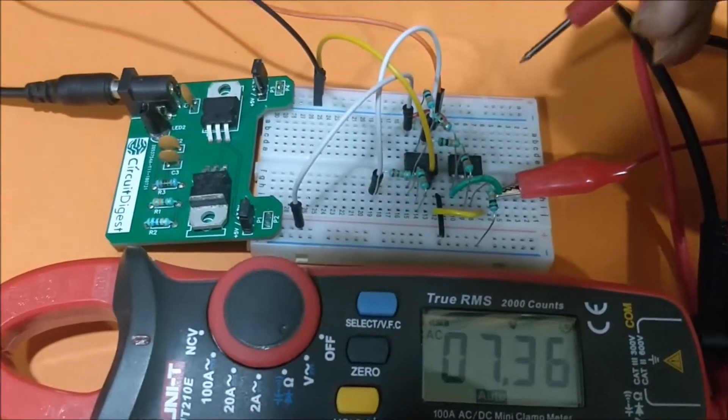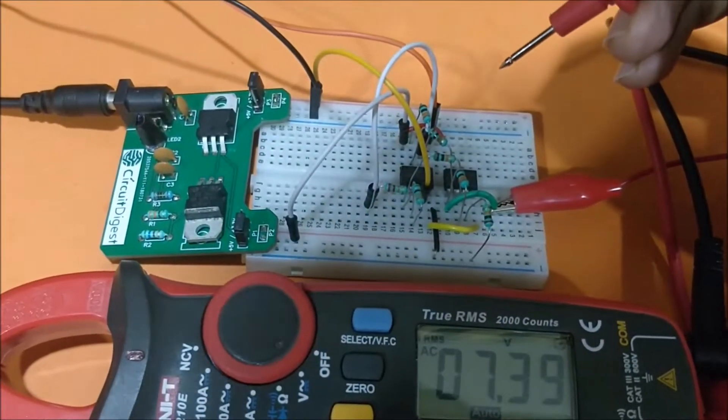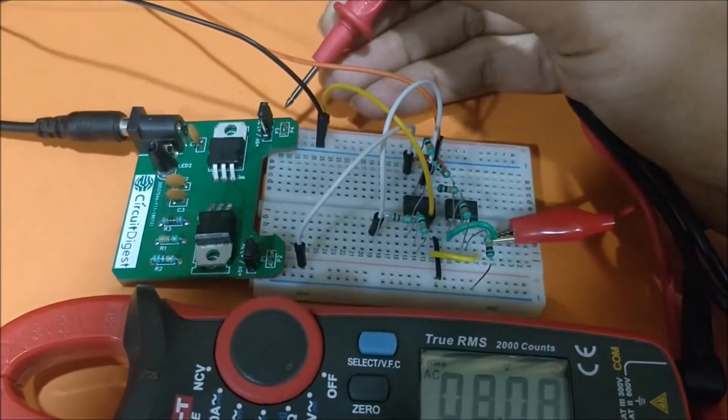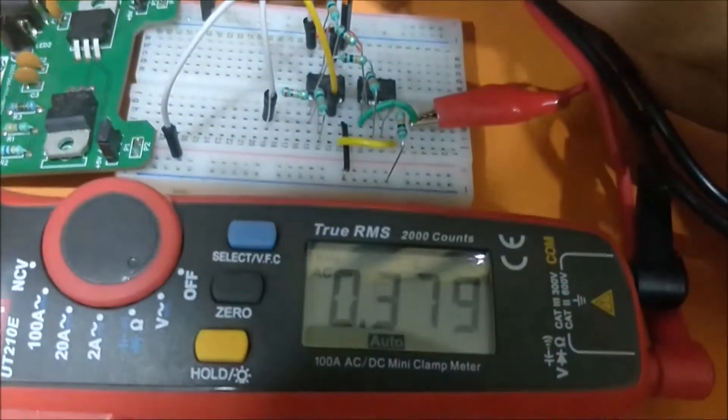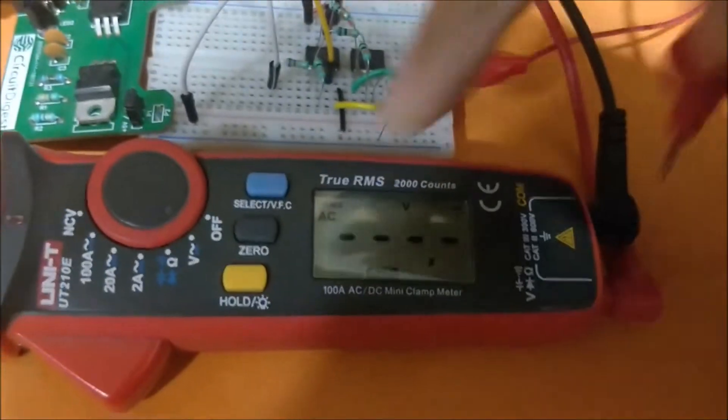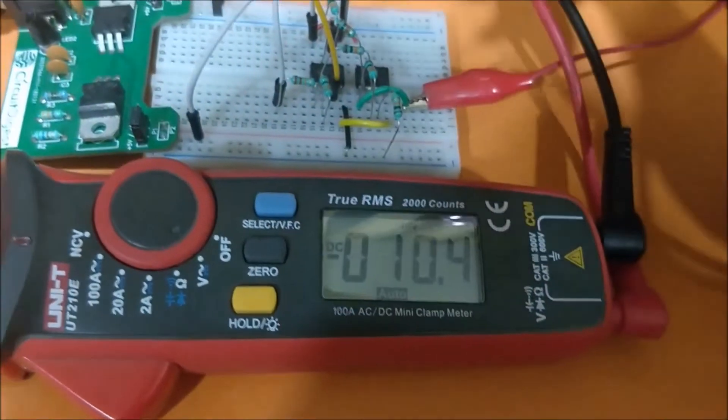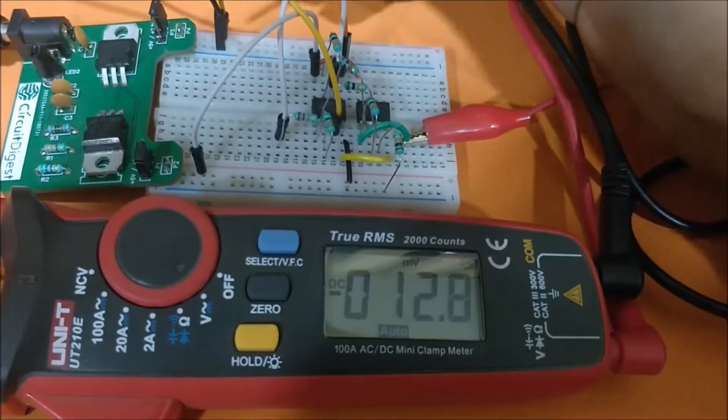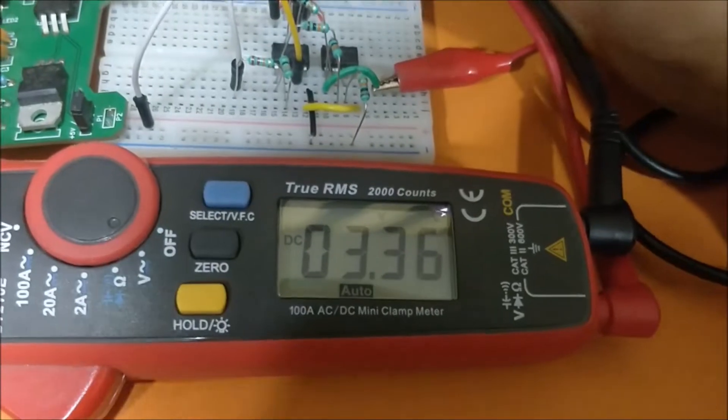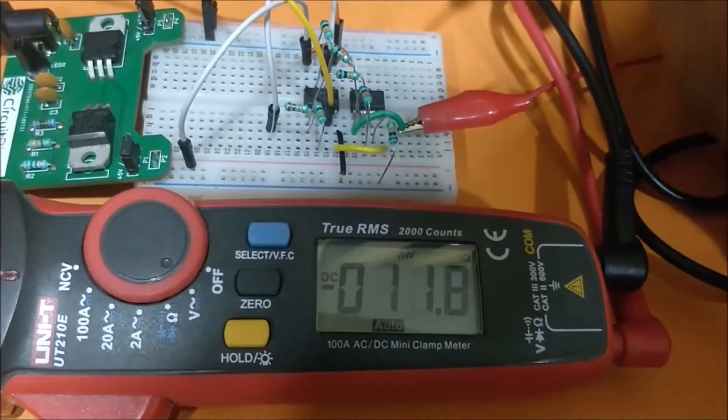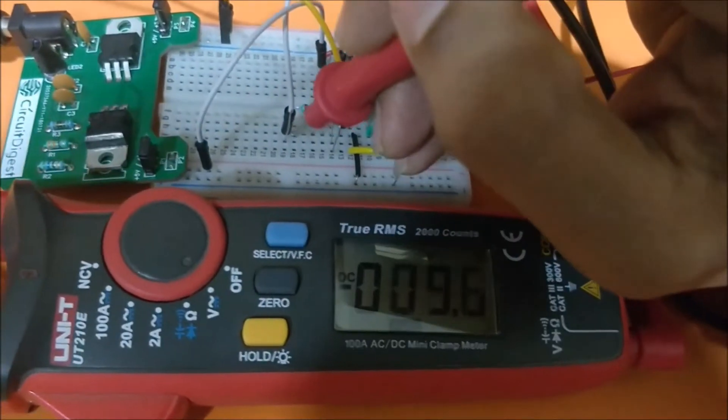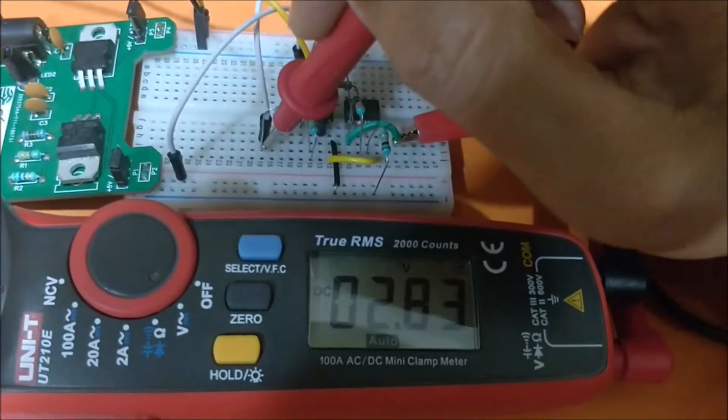The first input voltage is over here. Okay, I have to put it in DC mode. The first input voltage is 3.36V, which is coming from the breadboard power supply, and the second input voltage is 2.83V.